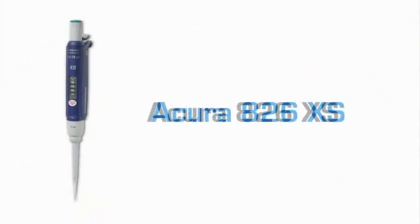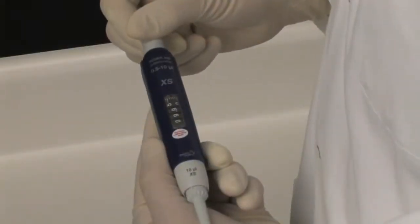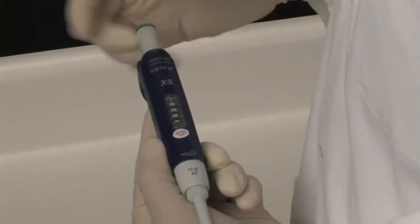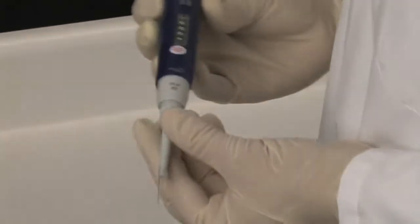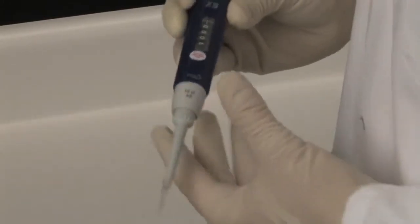The new Acura 826XS is specifically designed for research applications to make working with critical samples trouble-free and more precise. While providing all of the standard features of the Acura Manual line of pipettes, including precise setting and checking volumes, as well as user-friendly tip adjustment to accommodate a variety of tips.